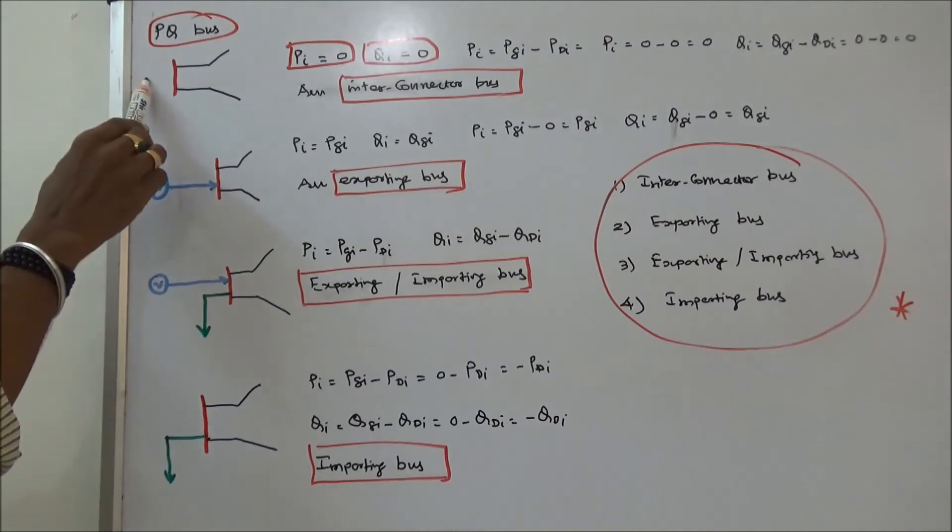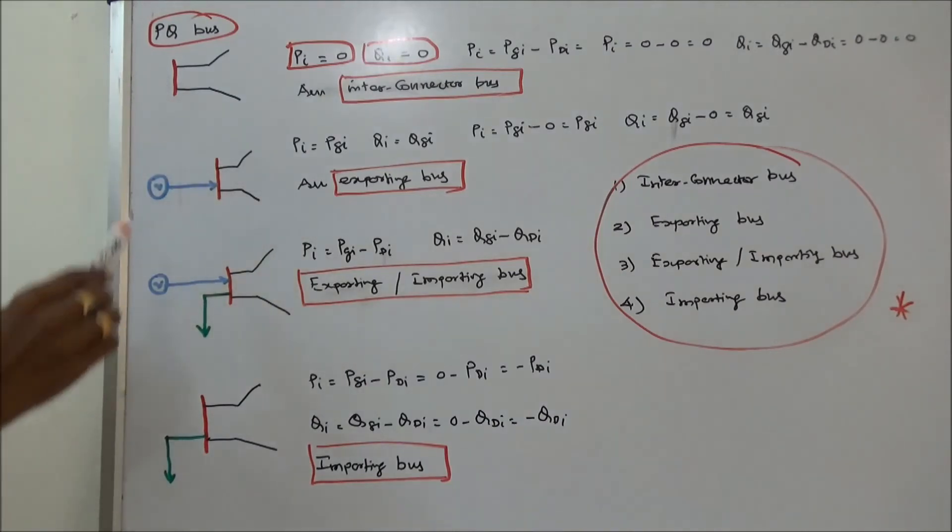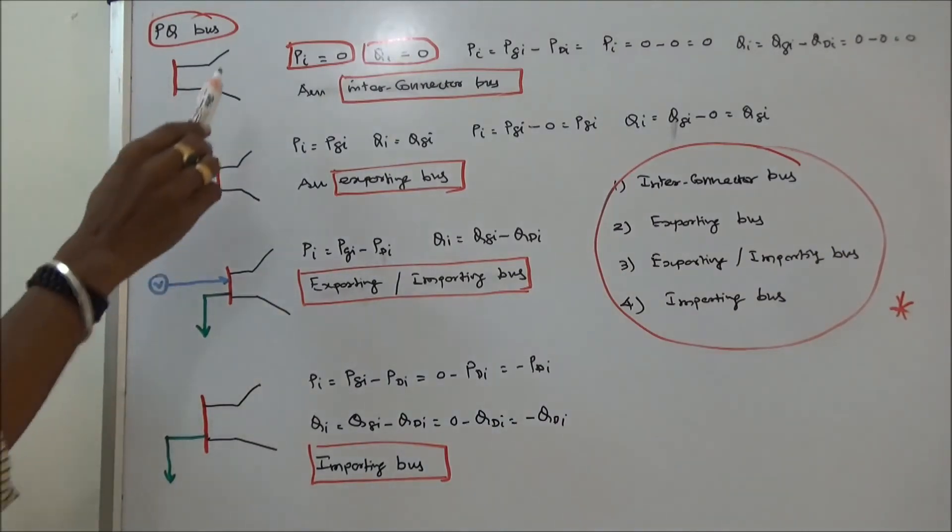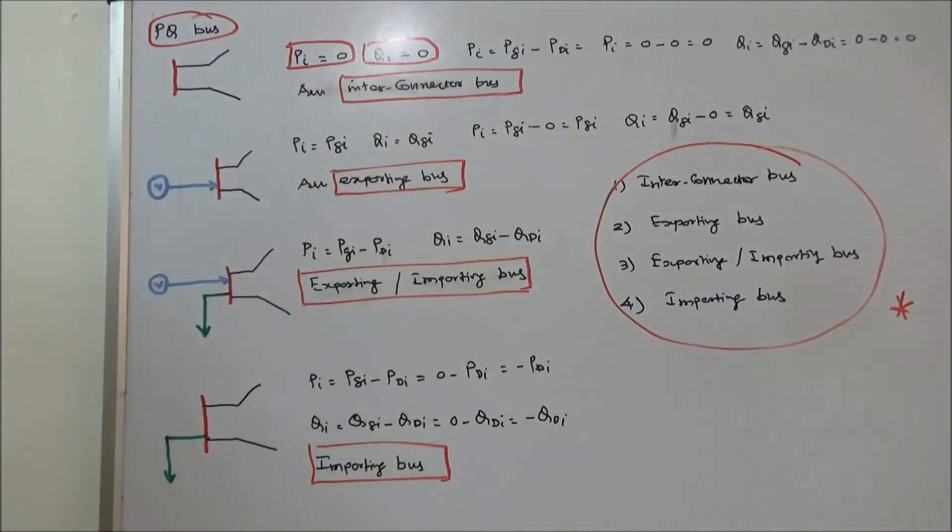Here we have connected one generator. Therefore PI is equal to PGI, QI is equal to QGI. This bus is called an interconnector bus.